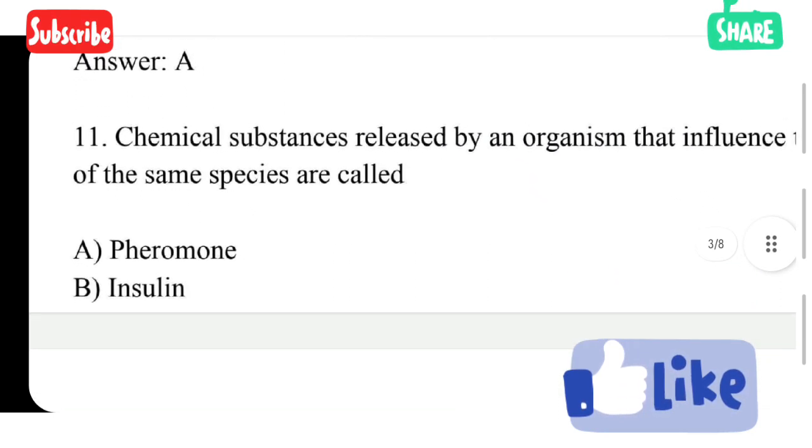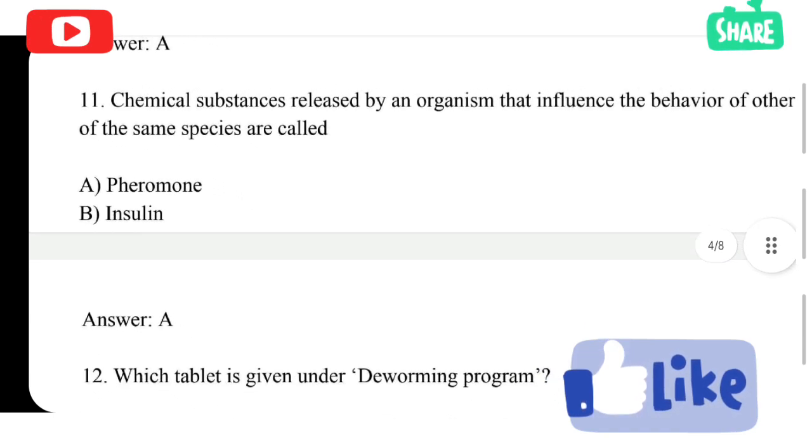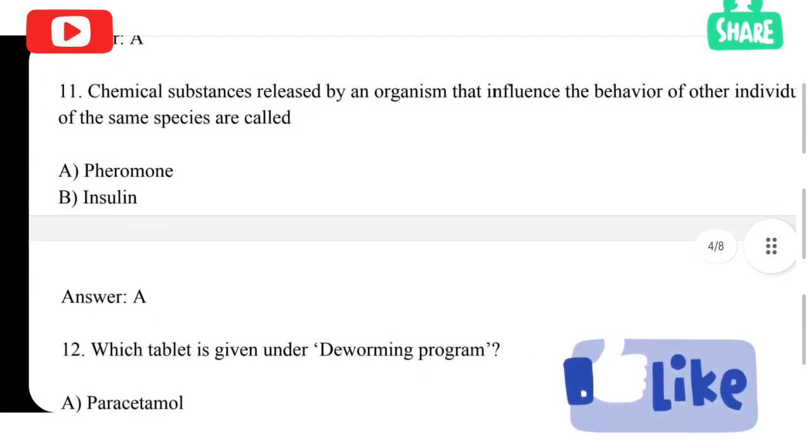Chemical substance released by an organ that influences the behavior of other individuals of the same species are called option A pheromone, option B insulin. Option A is correct answer, pheromone.